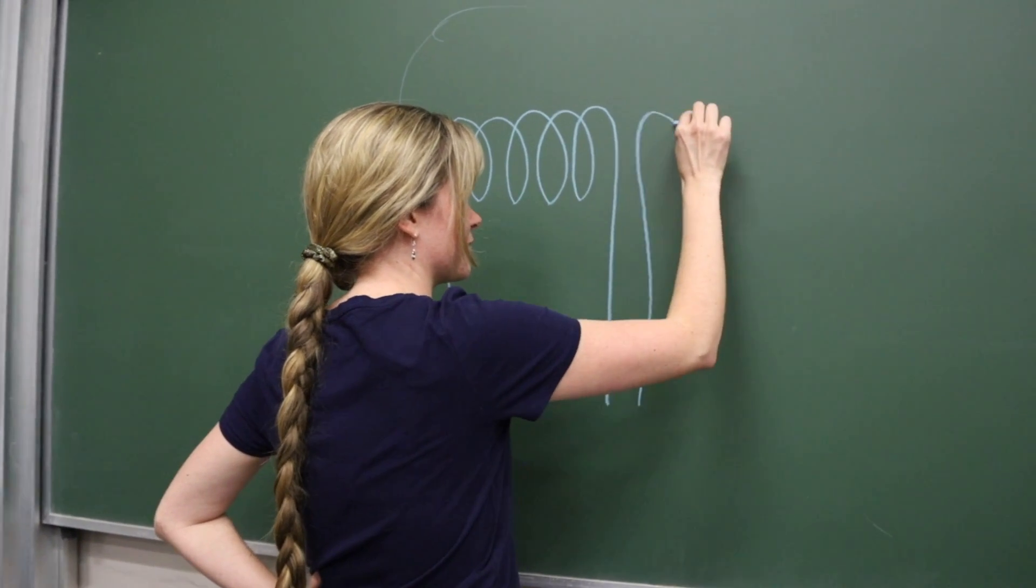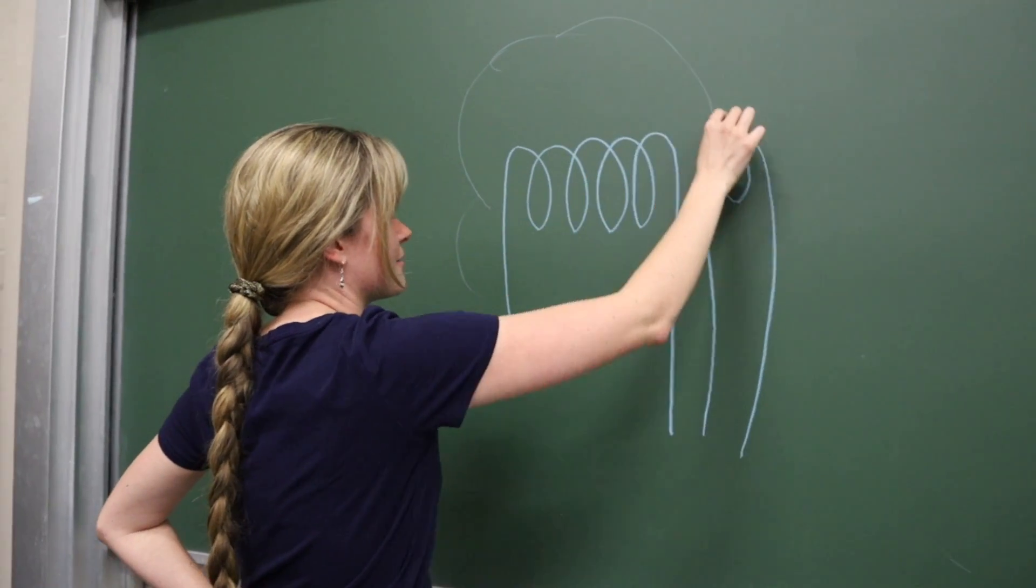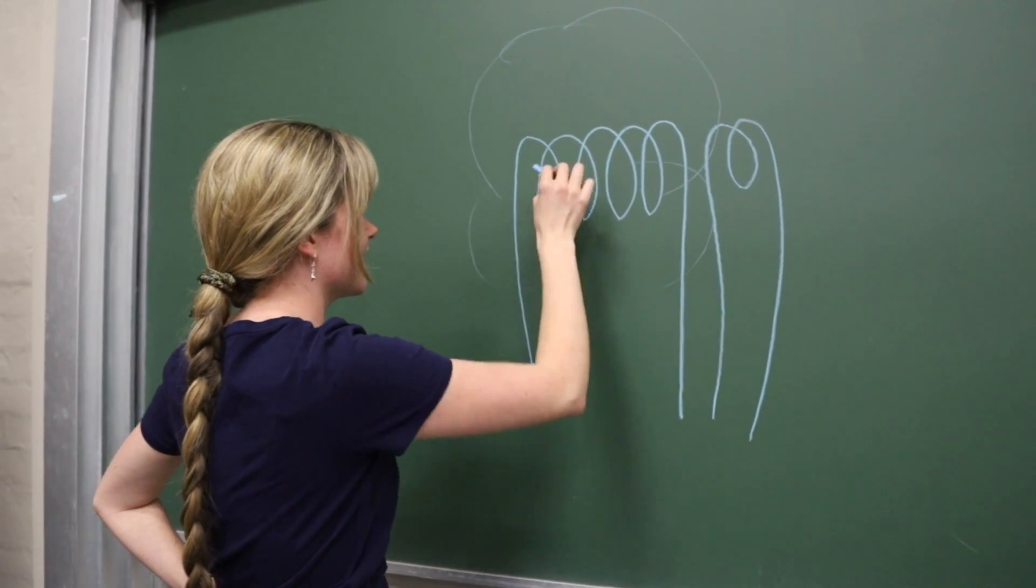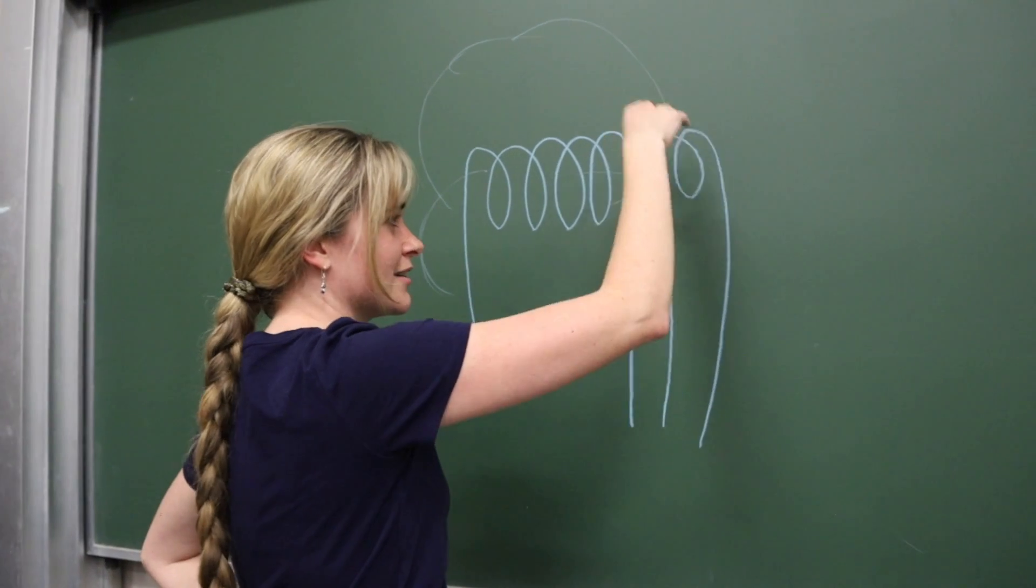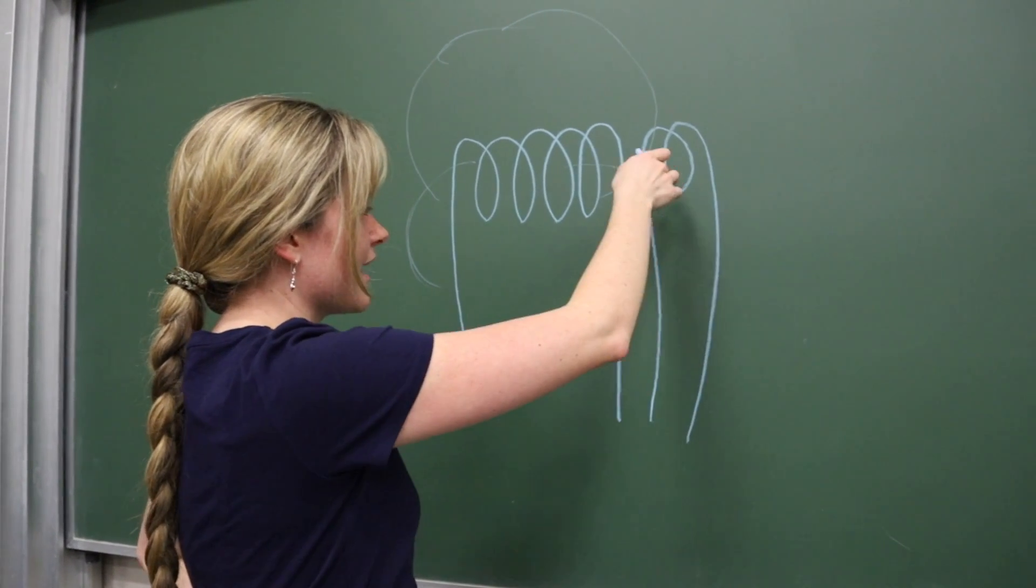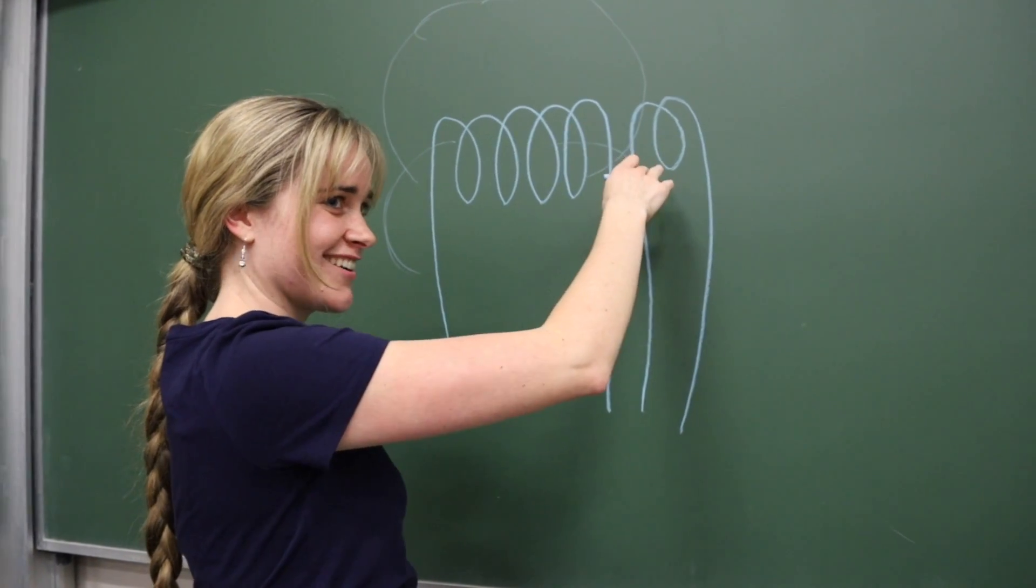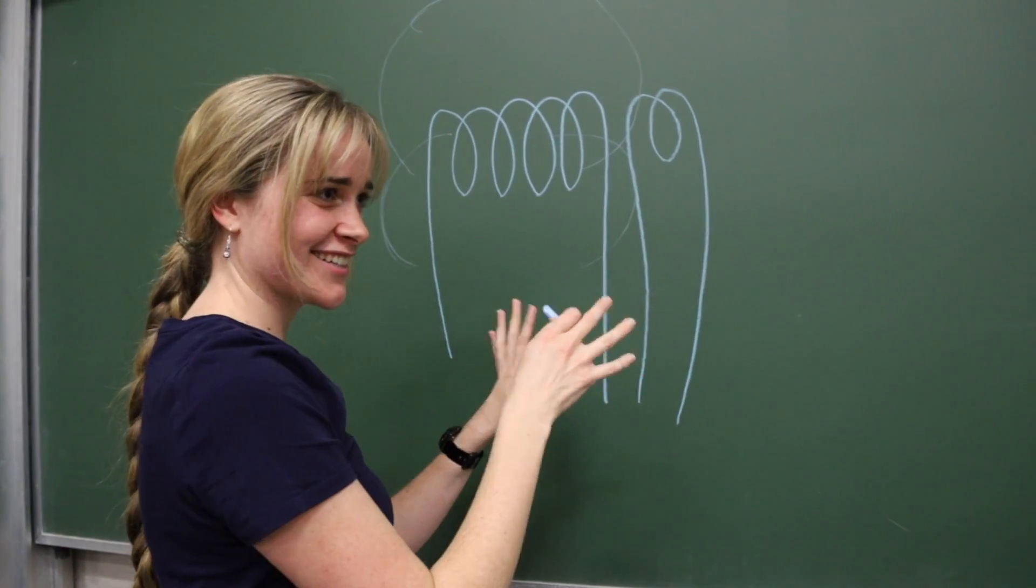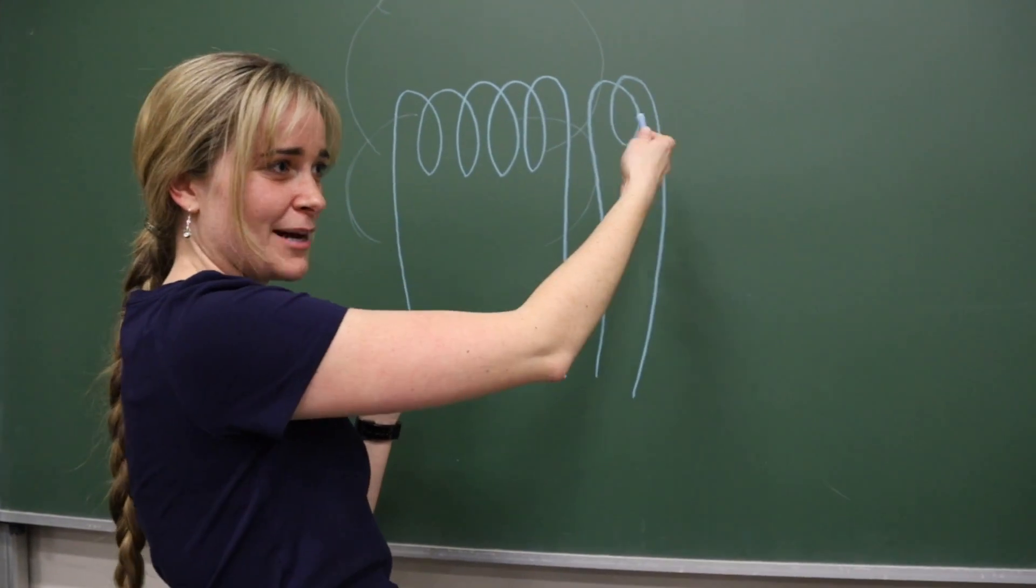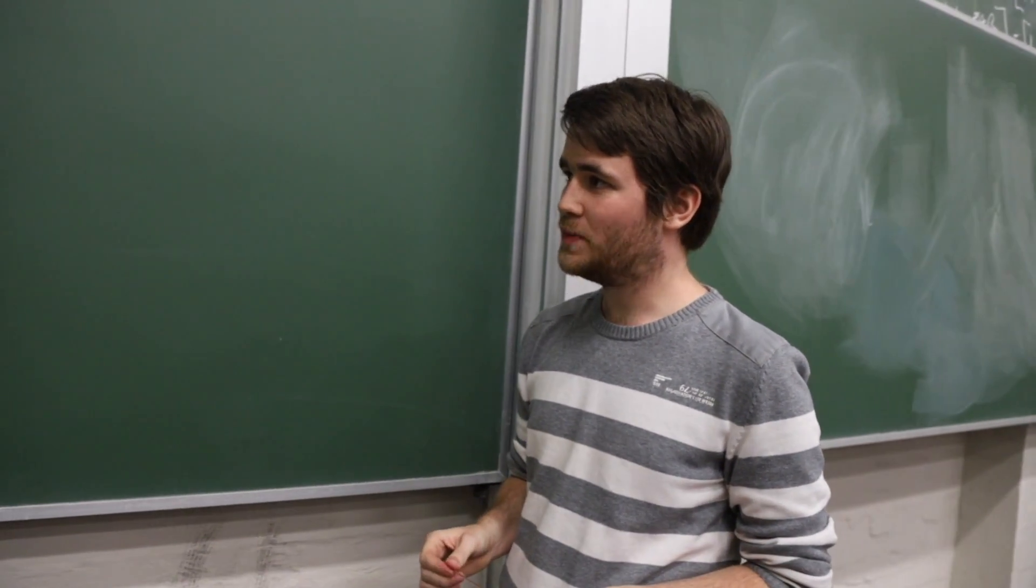Another coil with less turns, and this magnetic field here is going to induce a current in this second coil. And as we have less turns in this second one, the voltage is going to step down, and by conservation of energy, the current is going to step up or increase. Exactly, yeah. And it should be pretty spectacular.